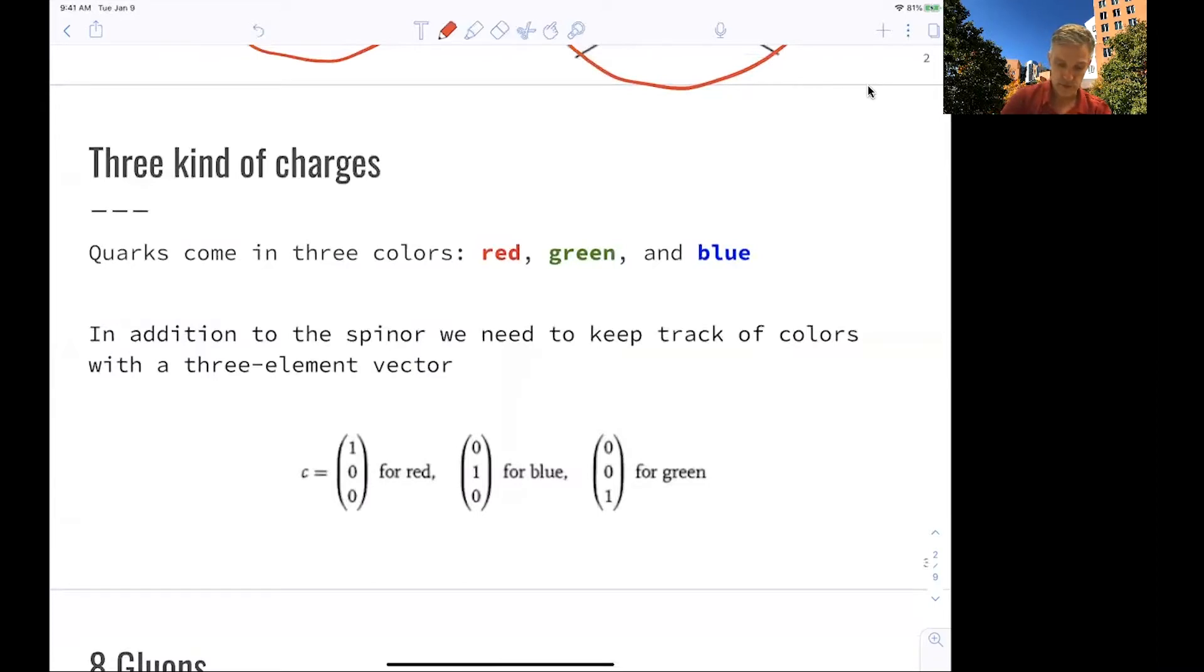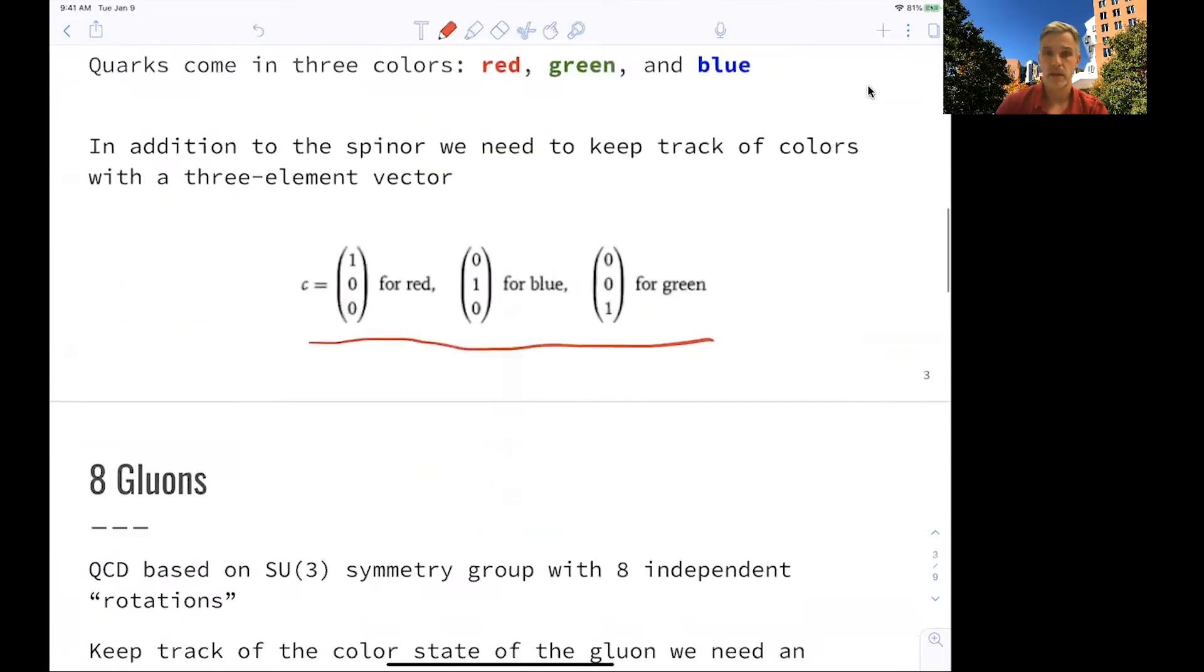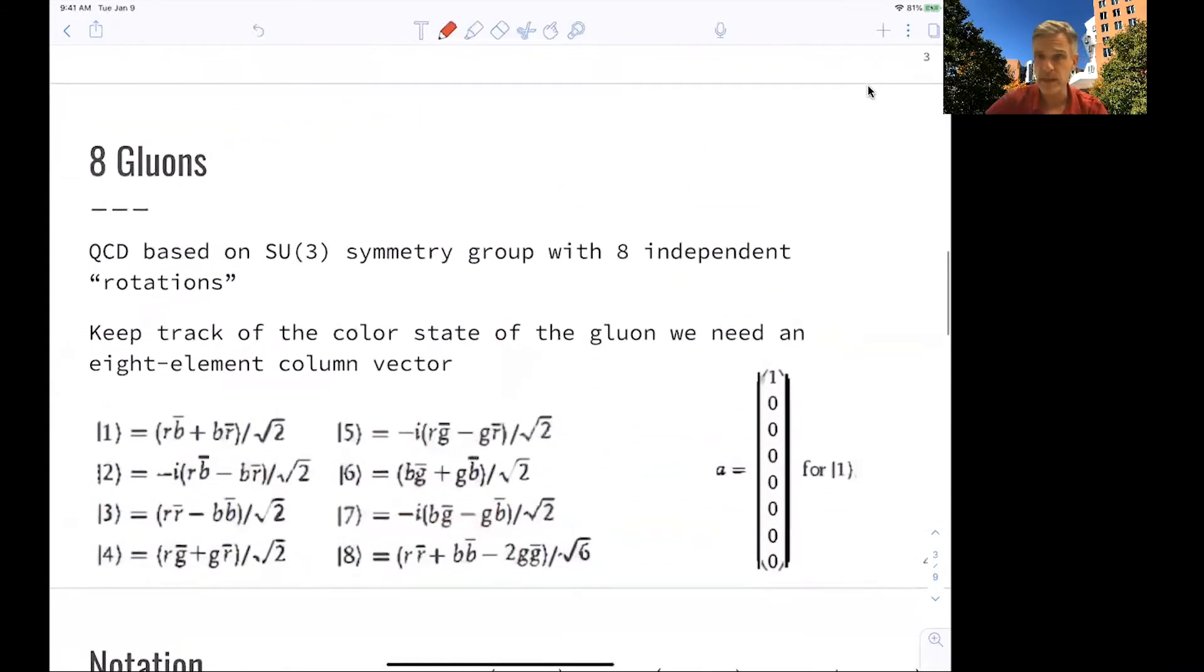So we do this by just introducing a new vector. I call this C here, very simple, a three-element vector for those three colors. But how about the gluon itself? So QCD is based on a symmetry group, which is called SU3. So it's basically a rotation in a three-dimensional space.